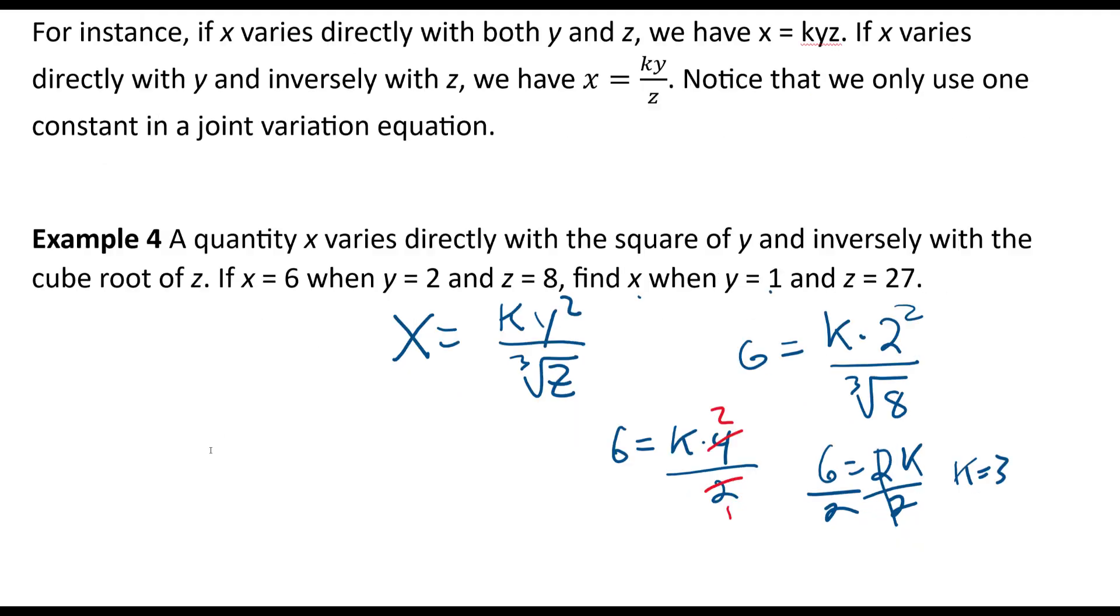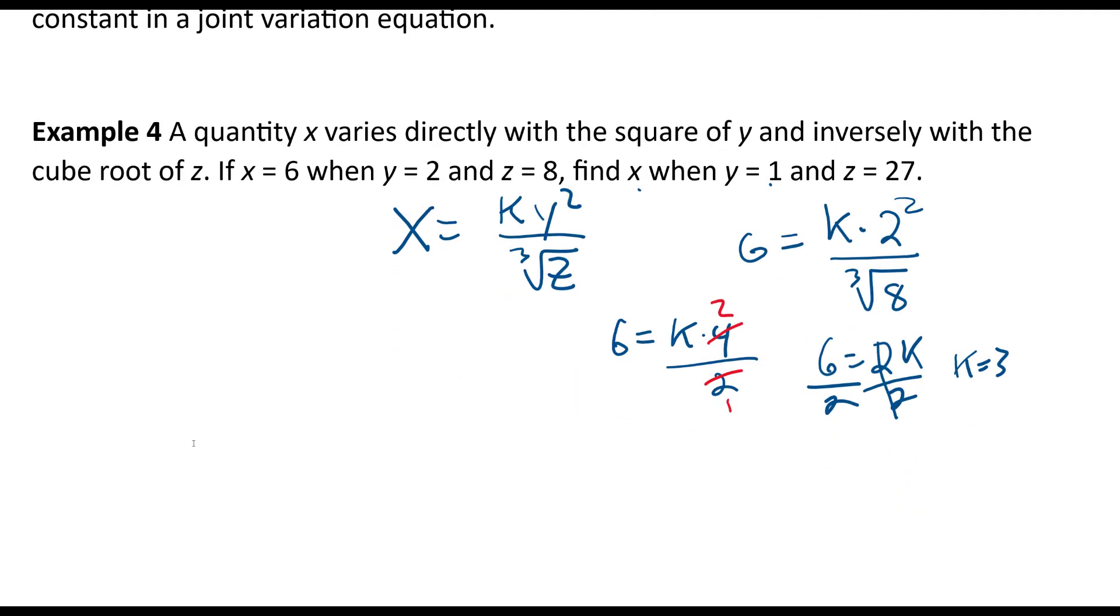So our formula would look like x equals 3 times y squared over the cube root of z. So what is x going to be when y is 1? We have 3 times 1 squared over the cube root of—oh, this should be a z not a y, sorry about that—of 27.